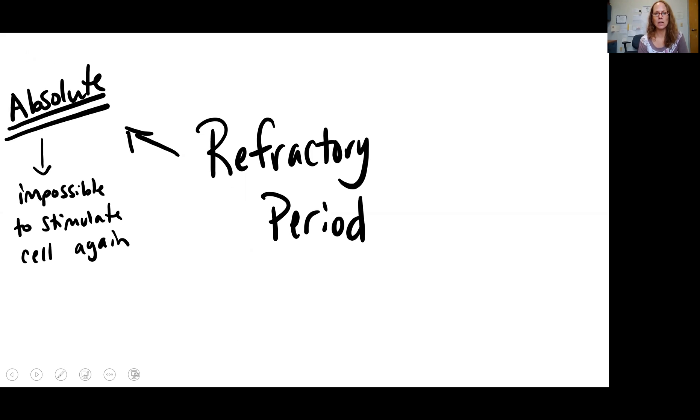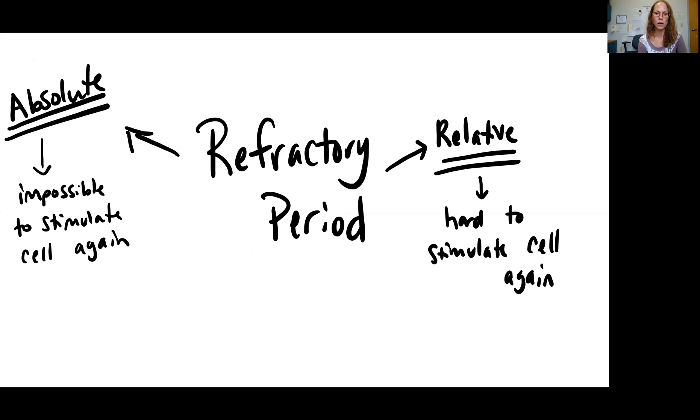There are two different types of refractory period. We have the absolute refractory period, which means it is impossible to stimulate the cell again during this period. Then we have the relative refractory period where it's possible, but it's super duper hard to stimulate the cell again.